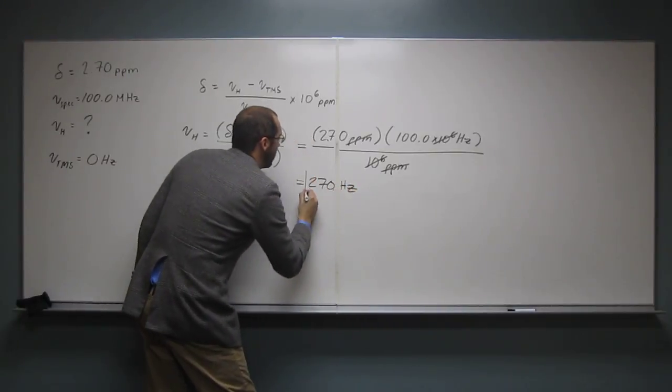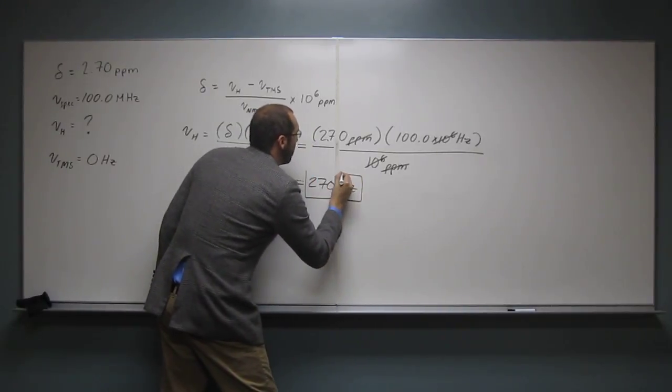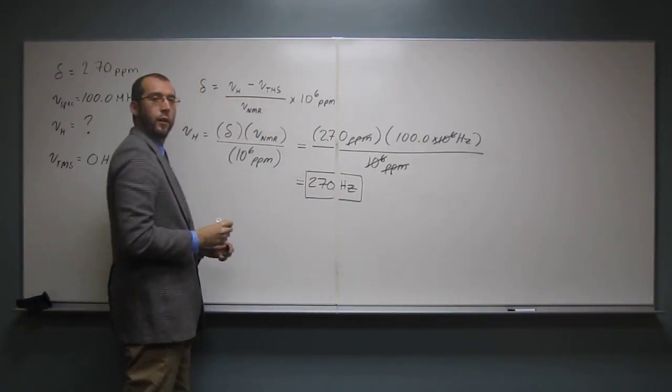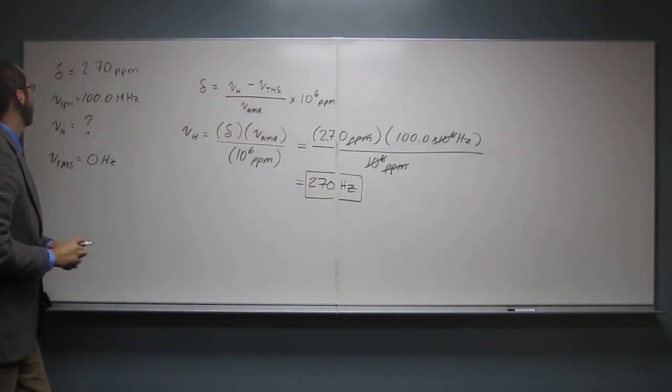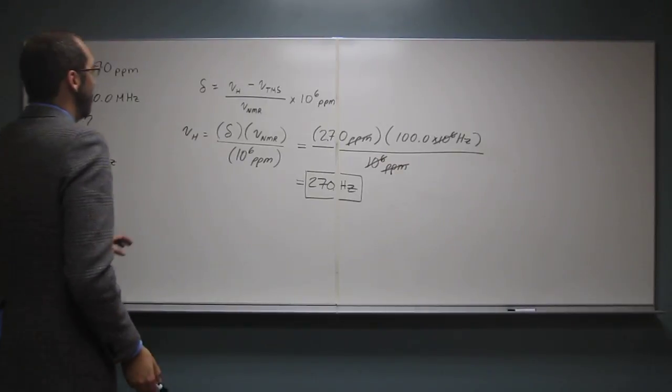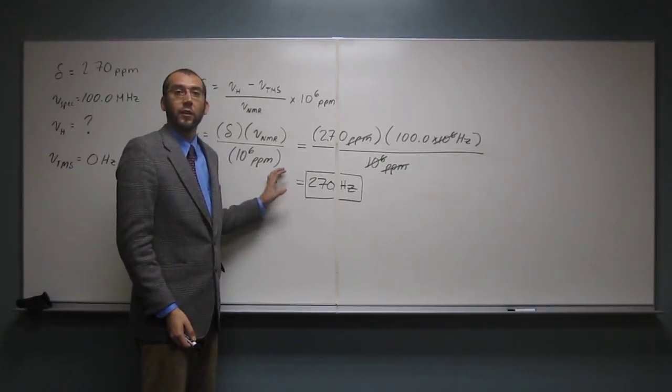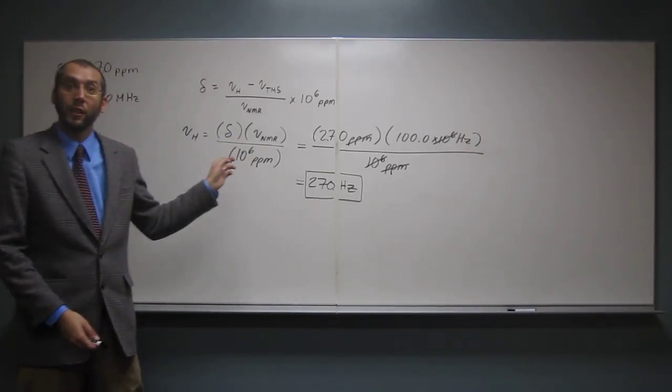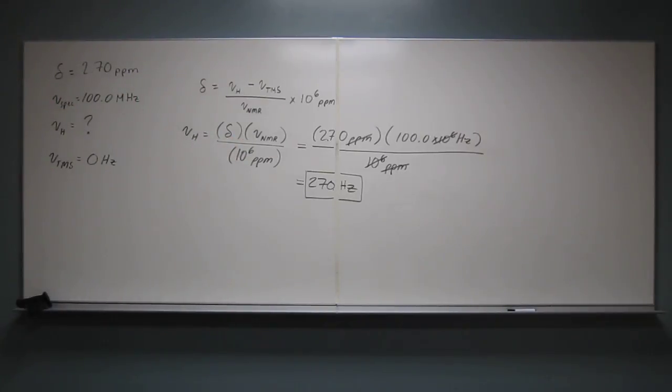So that's where the same proton you would find that initially was at 162 hertz on a 60 megahertz. What you'll find is it's 270 hertz on a 100. But the delta value for both of them is 2.7 PPM, the same. Any questions on this one? No questions. Okay, wonderful. We'll see you next time.